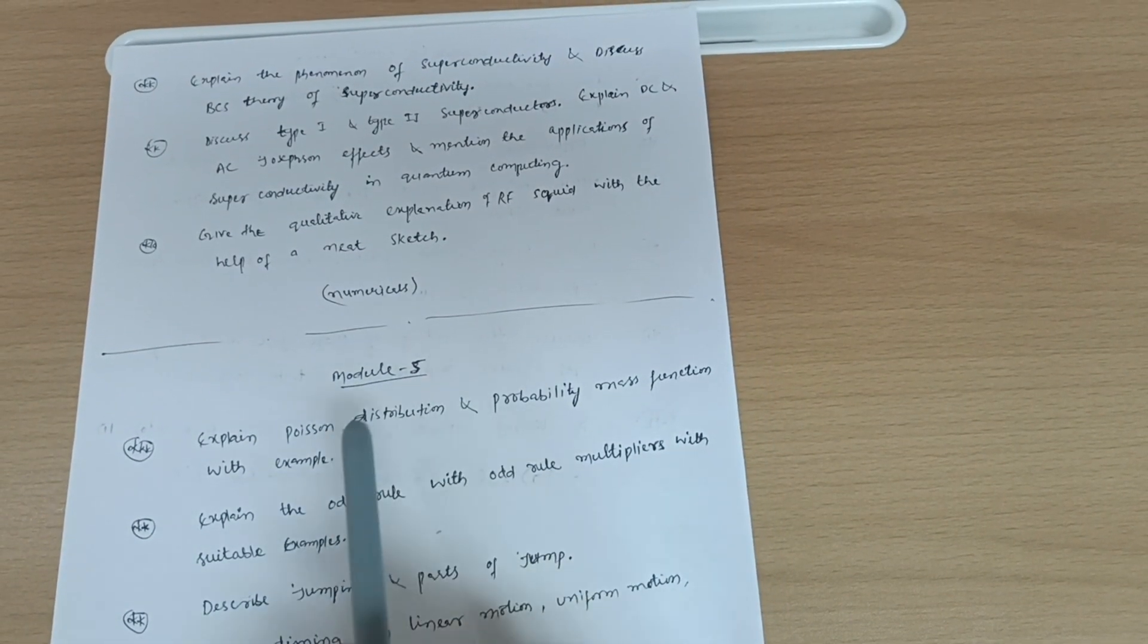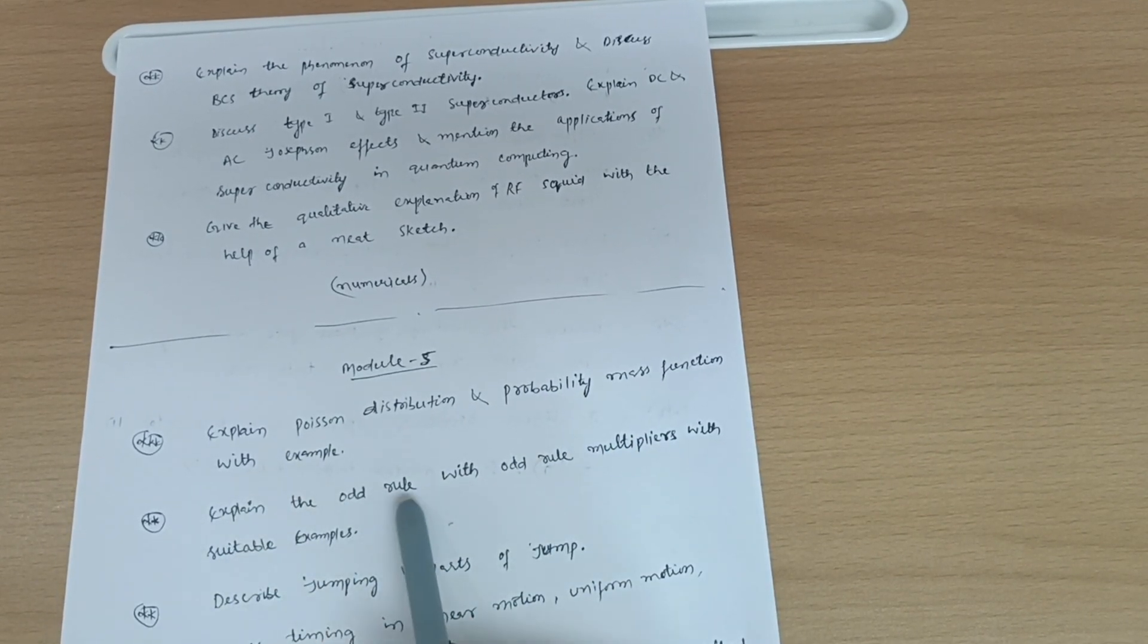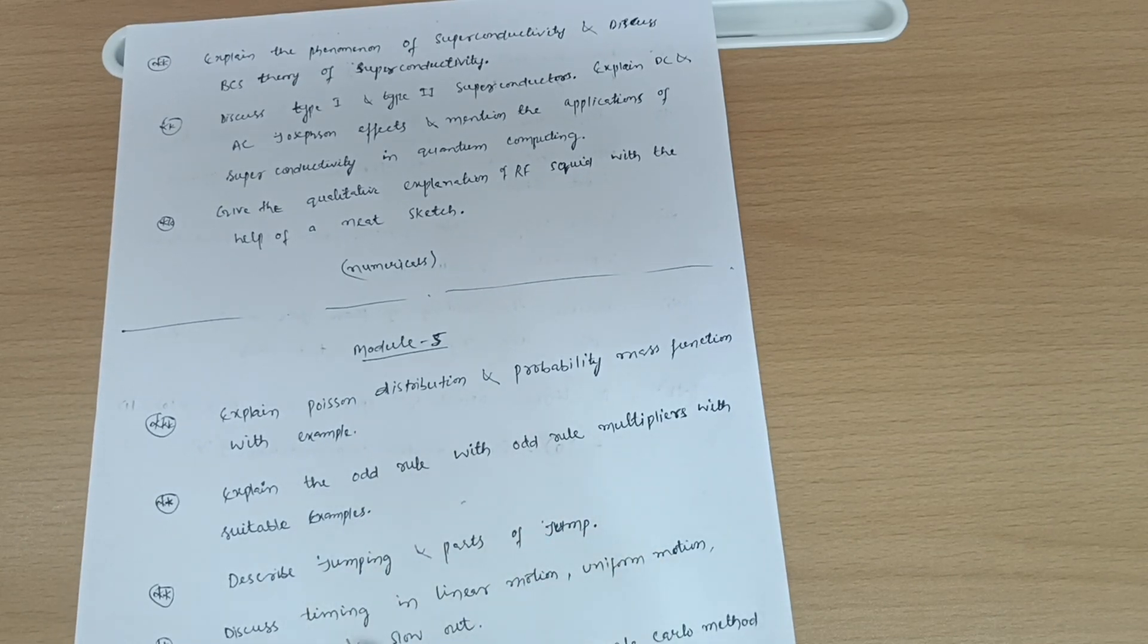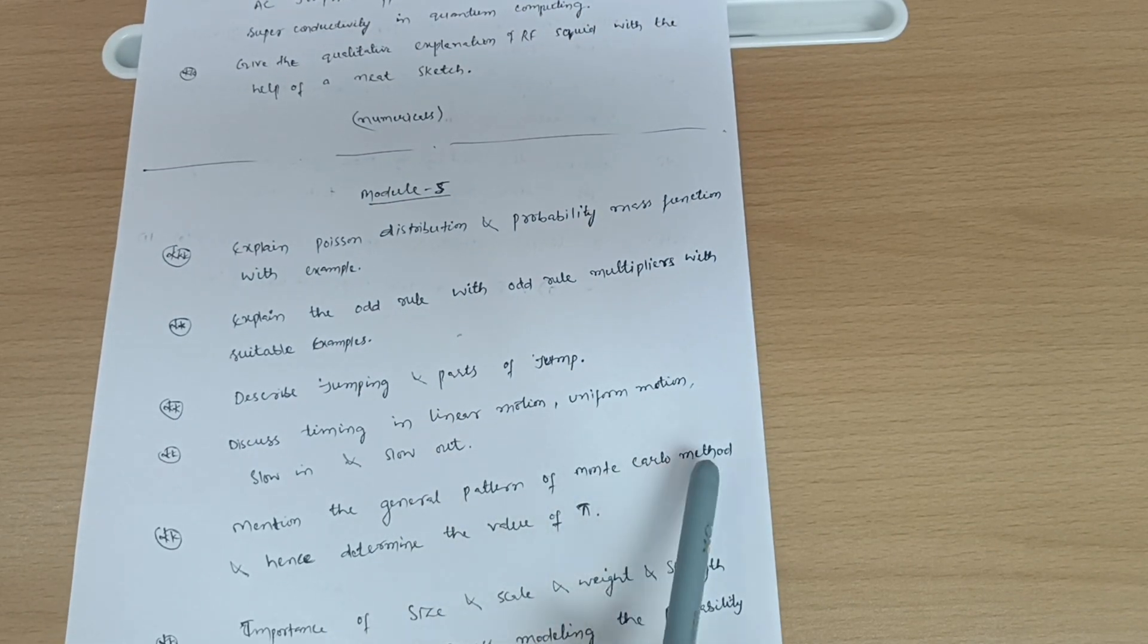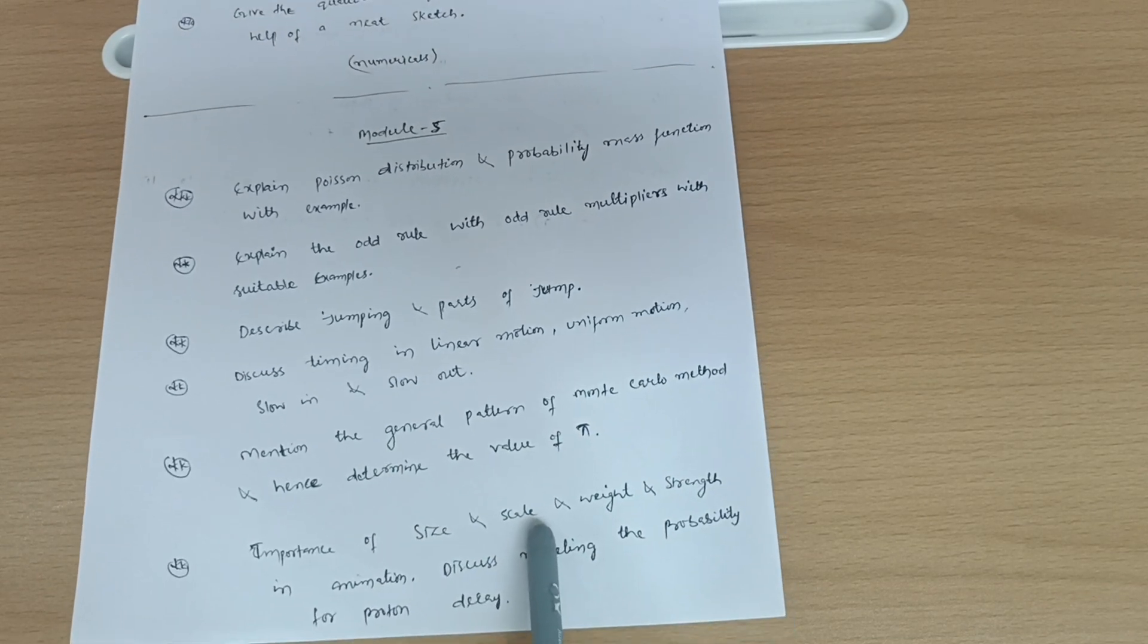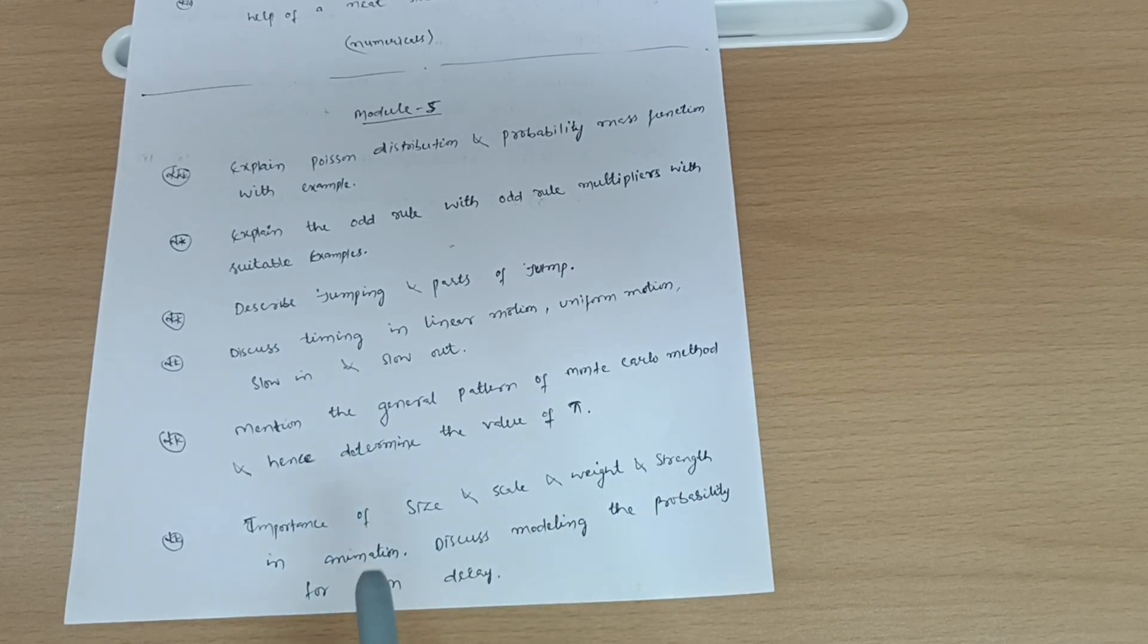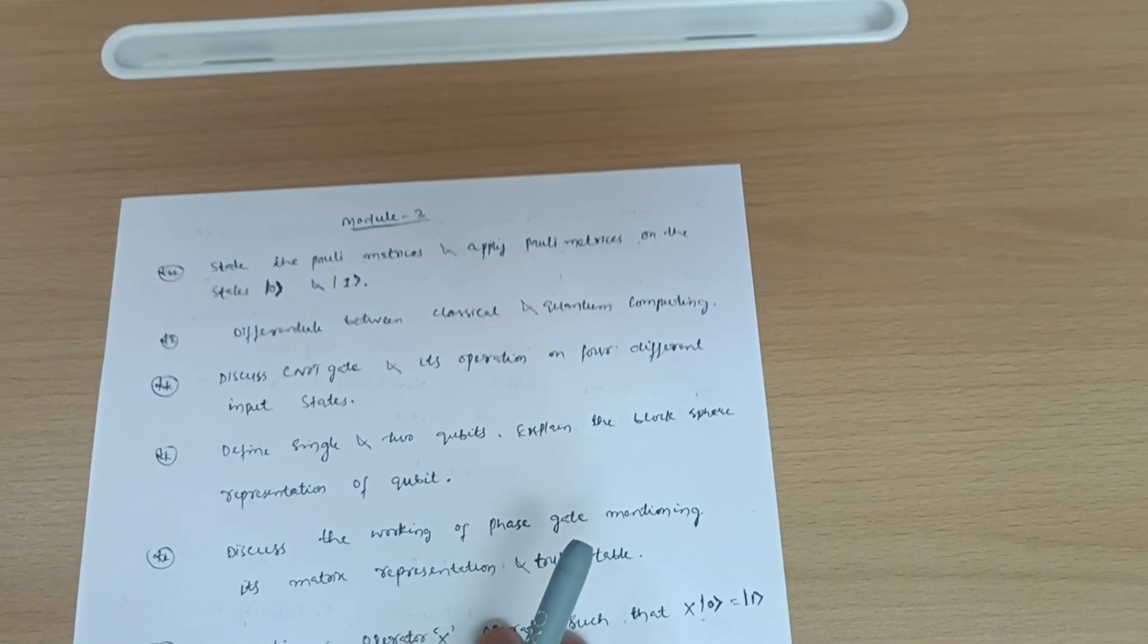Now module fifth. Explain Poisson's distribution and probability mass function with example and explain the odd rule with odd rule multipliers with suitable examples. Next is describe jumping and parts of jump and discuss timing in linear motion, uniform motion, slow in and slow out. Mention the general pattern of Monte Carlo method and hence determine the value of pi. Importance of size and scale and weight strength in animation. Discuss modeling the probability for proton decay. This much is enough for module fifth.